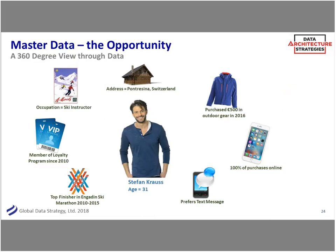The real benefit of master data is not only knowing who Stefan Krause is with the right age and address, but this idea of a 360 view of a customer: Stefan Krause is 31 years old, lives in Pontusina, Switzerland, has purchased this amount in outdoor gear, buys online instead of in a store, likes to be communicated by text message. Or external data — he won the Engadiski Marathon in 2015. This is a bit beyond what some consider master data, but there's the master data of knowing this Stefan Krause is different than Stephanie Krause's sister, and augmenting that, perhaps some of which is in a lake.